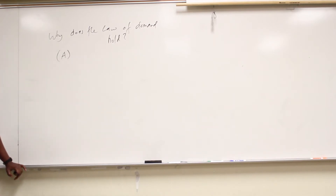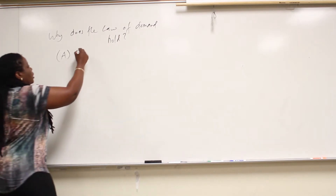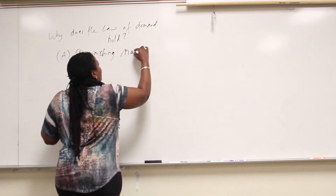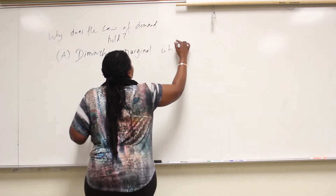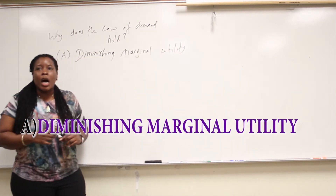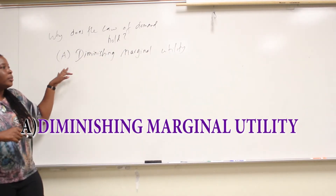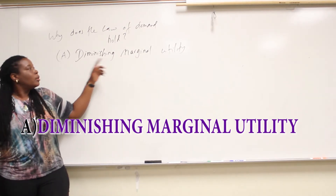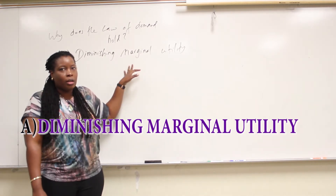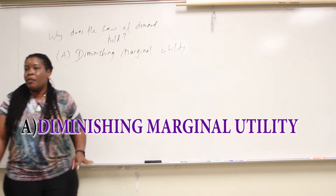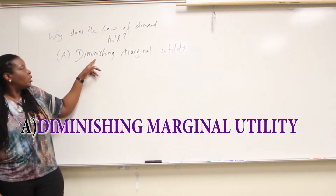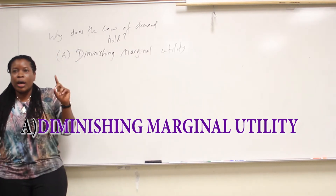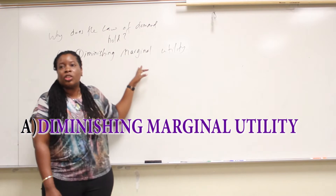The first reason we have is something called Diminishing Marginal Utility. Diminishing means decreasing. Marginal means extra or additional. Utility means pleasure or satisfaction. So this is decreasing extra satisfaction — one reason why the law of demand holds: decreasing additional pleasure.